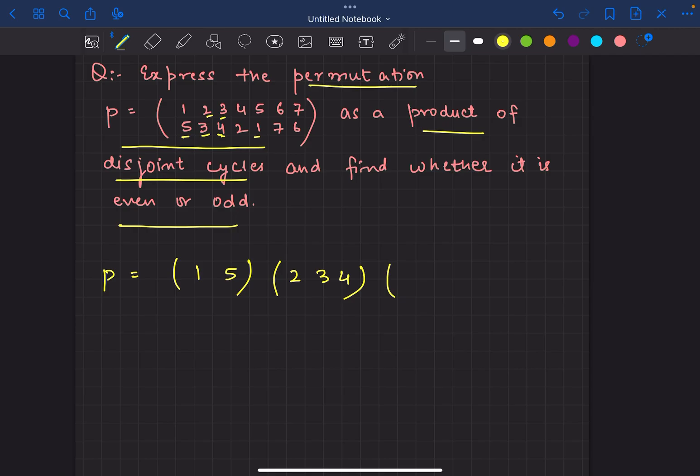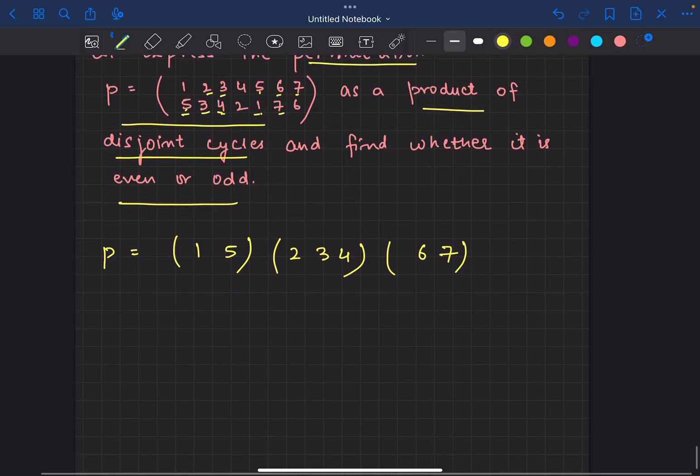Now 6 is going to 7, and 7 is going to 6. When I write it as a 2-cycle, now 1 is going to 5, so it will be written as a cycle: 1 and 5, and 5 is going to...